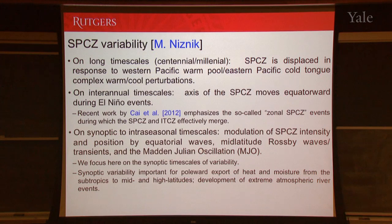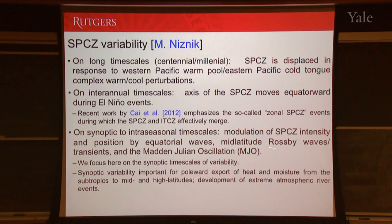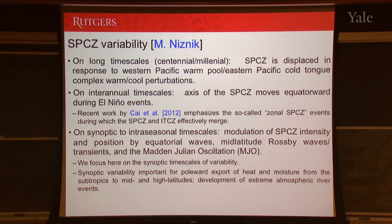What I'll mostly talk about today is SPCZ variability. I already alluded to inter-annual timescales — the relationship between the SPCZ axis of strongest convection and the phase of ENSO. People have also looked at centennial or millennial timescale variations in warm pool SSTs or Eastern Pacific SSTs and their effect on SPCZ spatial orientation. What I want to focus on more is the higher-frequency part: on synoptic to intraseasonal timescales we see modulation of SPCZ intensity by equatorial waves, mid-latitude Rossby waves and transients, and the Madden-Julian oscillation on intraseasonal timescales. I want to focus on the synoptic variability — timescales of a week or so.